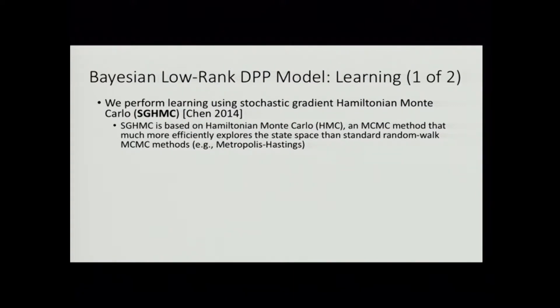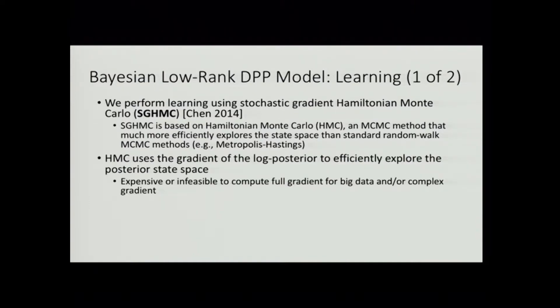We've defined the model and would like to perform learning efficiently in a Bayesian context. We chose to use Stochastic Gradient Hamiltonian Monte Carlo, or SGHMC, from a paper at ICML 2014. SGHMC performs much more efficiently than other conventional MCMC inference approaches like Metropolis-Hastings or even Gibbs sampling in some cases. The intuition behind Hamiltonian Monte Carlo is that it uses the gradient of the log posterior to more efficiently explore the state space of the posterior — by following the gradient, it leads us into high-density regions.